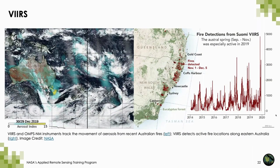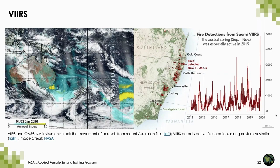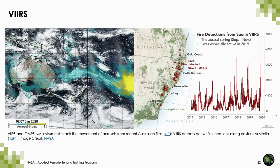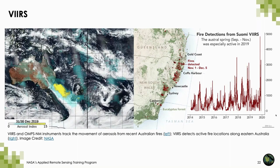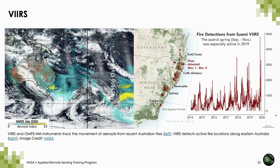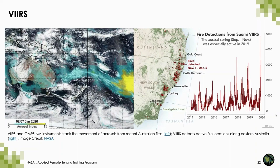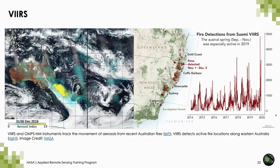One recent example of VIIRS data comes from the fires burning in Australia. The animation on the left shows smoke plumes coming off of eastern Australia and traveling across the globe, shown in yellow using an aerosol index. The image on the right indicates actively burning fires — all of the red locations — from November 1st to December 5th of 2019.